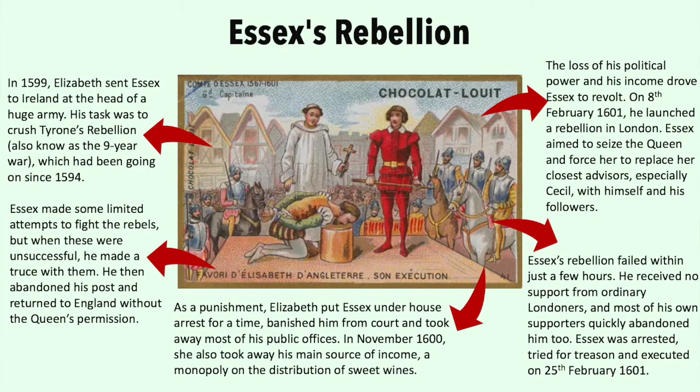In 1599, Elizabeth sent Essex to Ireland to head a huge army. His task was to crush Tyrone's Rebellion, also known as the Nine Years' War, which had been going on since 1594. Essex made some limited attempts to fight the rebels, but when these were unsuccessful he made a truce with them. He then abandoned his post and returned to England without the Queen's permission.